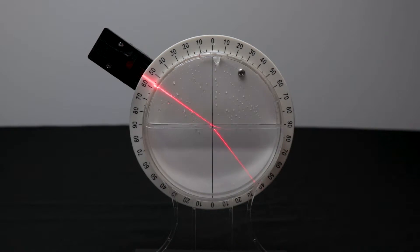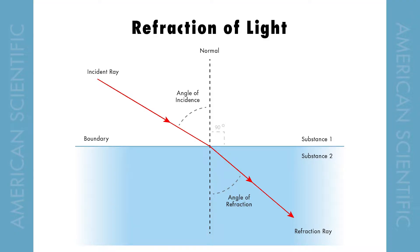Do you see how the light beam bends after passing through the water? This is because the water is denser than the air, which slows down the light, causing it to bend. This change in direction is called refraction.